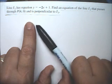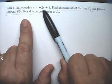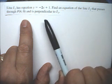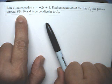And here we have, this example gives us the equation of this line, and we have to find the equation of a second line that passes through this point, 4 comma 0, and is perpendicular to the first line.